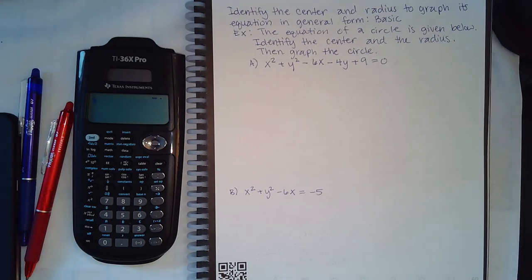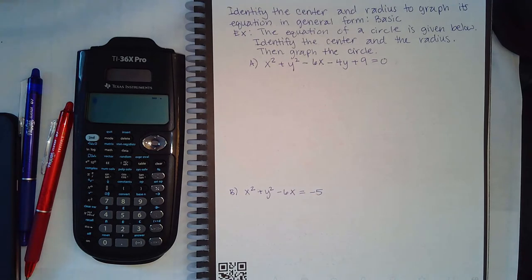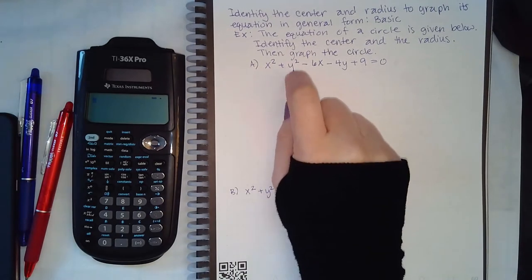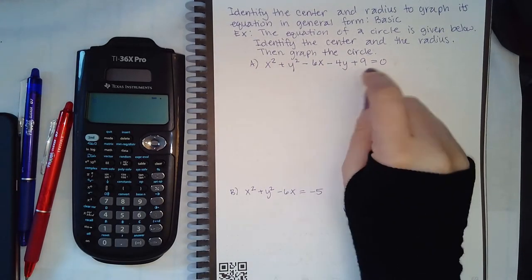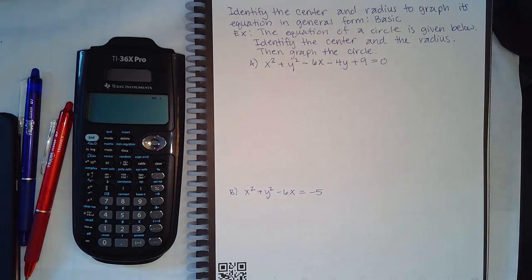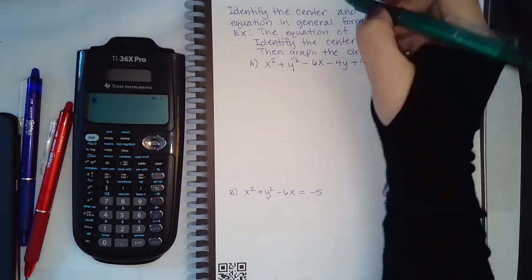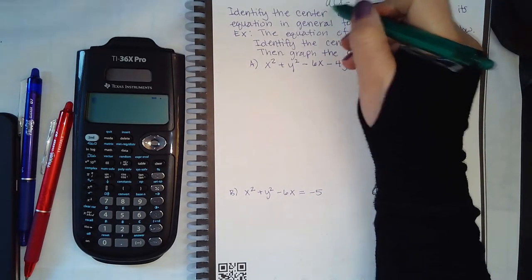In a previous video (Module 320), I told you that completing the square would come back when we reached circle topics in college algebra, and sure enough we've hit our first one. The problem asks us to identify the center and radius from an equation in general form: x squared terms, y squared terms, x's, y's, and constants equal to zero. From the previous example we only know how to identify the center and radius if the equation is in standard form.